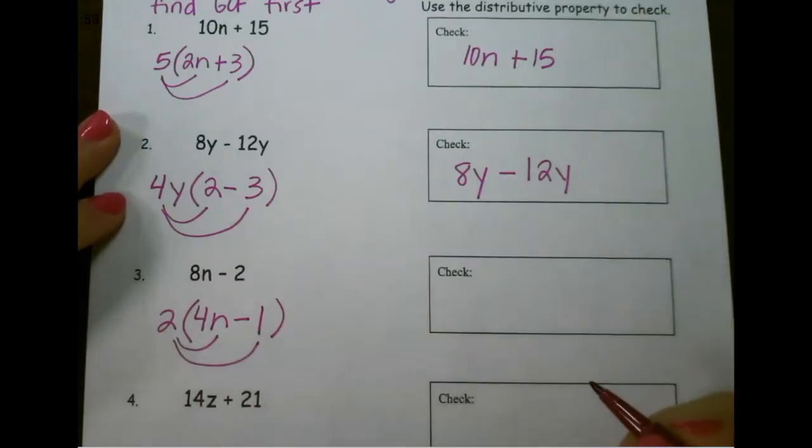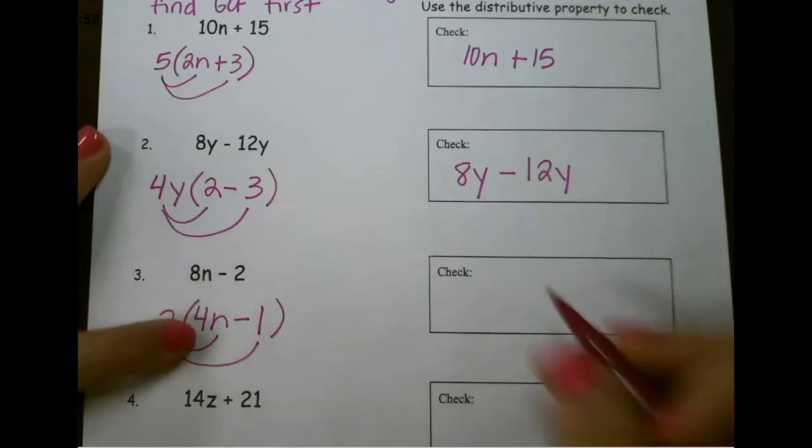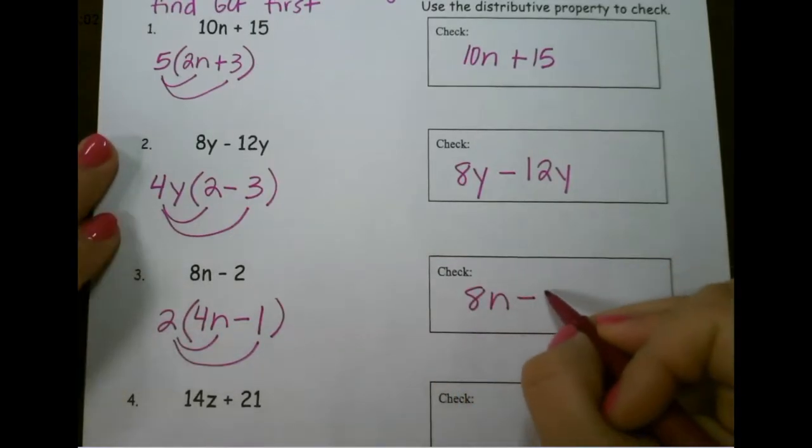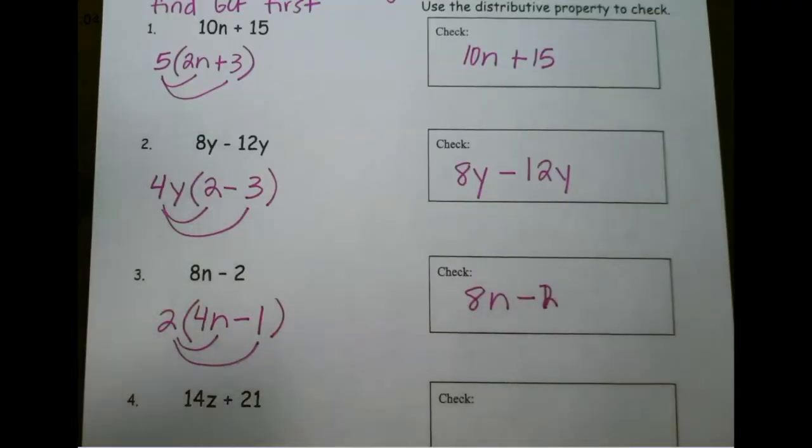Use the distributive property to check. 2 times 4n gives me 8n, and 2 times 1 gives me 2.